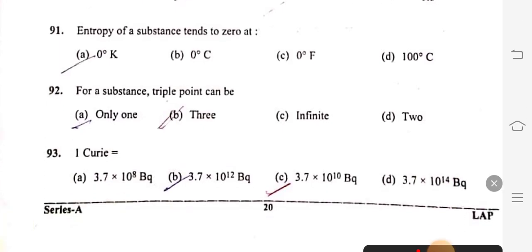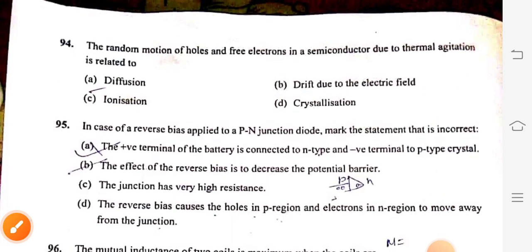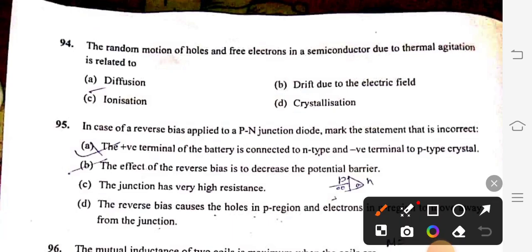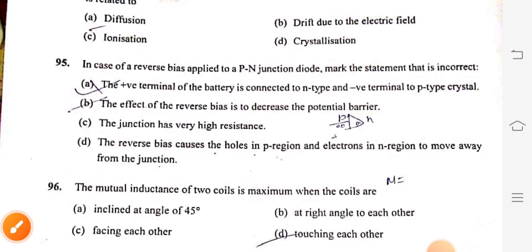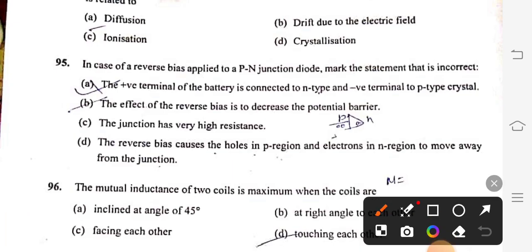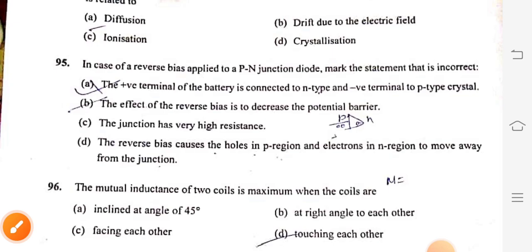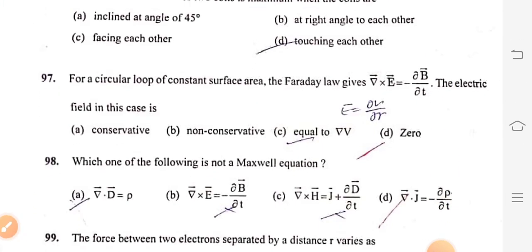Question 91: Entropy of a substance tends to 0 at 0 degree Kelvin, option A. Question 92: For a substance, triple point can be 3, option B. Question 93: 1 Curie equals 3.7 into 10 to the power 10 becquerel, option C. Question 94: The random motion of holes and free electrons in a semiconductor due to thermal agitation is related to diffusion, option A. Question 95: In case of reverse bias applied to a PN junction diode, the incorrect statement is option B. The effect of reverse bias is to decrease the potential barrier. It does not decrease it, it increases the potential barrier. Question 96: The mutual inductance of two coils is maximum when the coils are touching each other, option D.